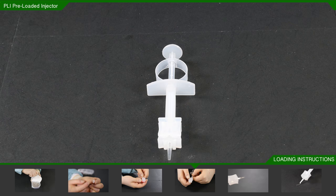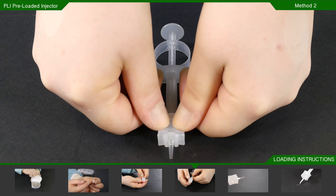Place the PLI with the loading tab facing upwards on the sterile table and using both thumbs, press the tab firmly.